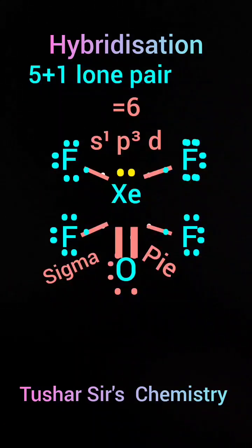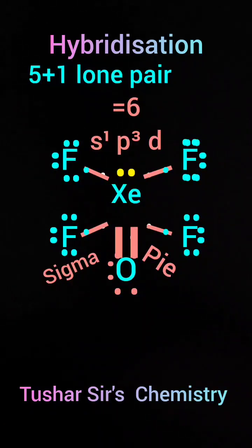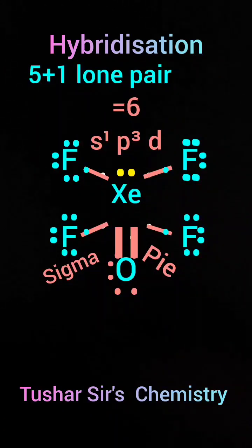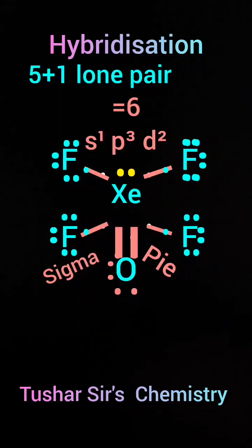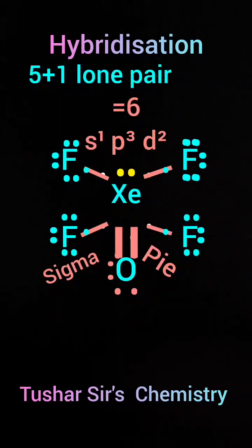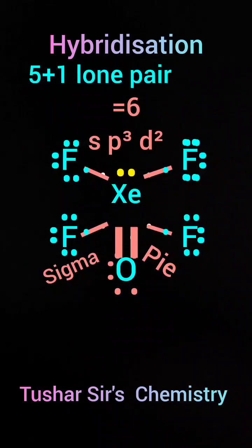S can take one because s has one orbital. We can take maximum three. Six minus one is five, so three can be taken by p: sp3. Three plus one is four, but we have taken six. Six minus four is two, so d can take two. So the type of hybridization of xenon will be sp3d2.